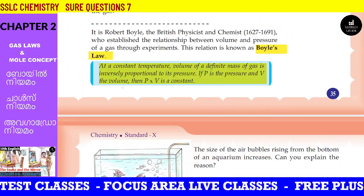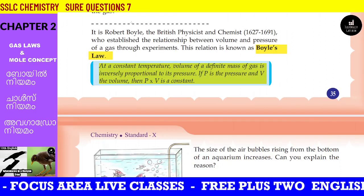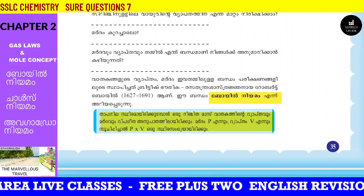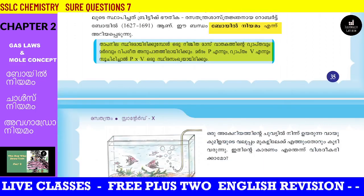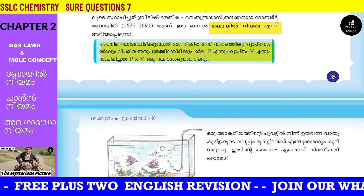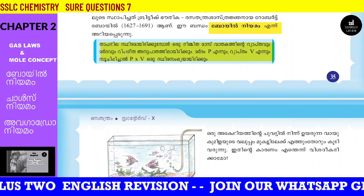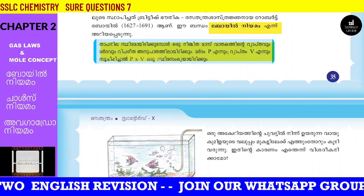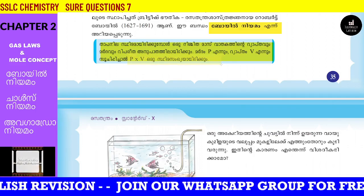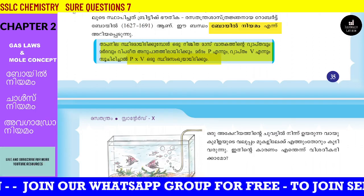P1 is equal to a constant. Pressure P1 and volume V1; pressure P2 and volume V2. Therefore, P1 V1 is equal to P2 V2.